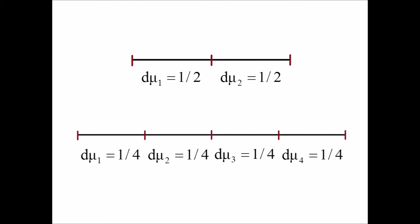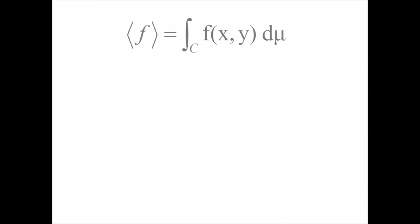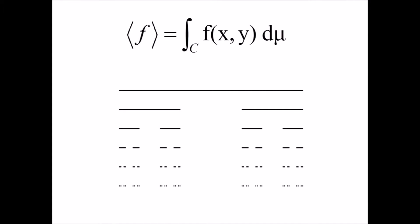Although we won't be expanding on exotic measure assignment further here, the possibility should be kept in mind. Summarizing: the average of a function f over a set C is equal to the integral of the function over the set with respect to its measure. Now let's look at an actual fractal. The Cantor set is constructed through a recursive process where we take a set and remove the middle third, then repeat this process on the two smaller sets. After an infinite number of iterations, the resulting set is a fractal.